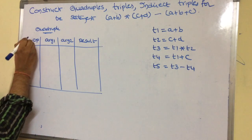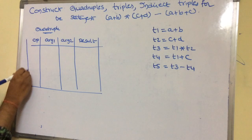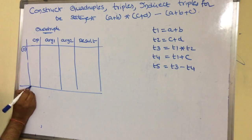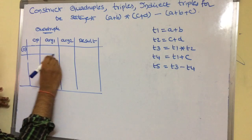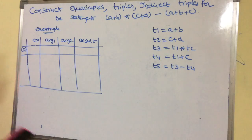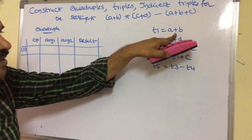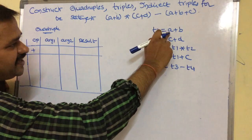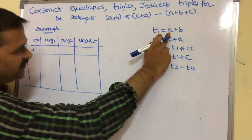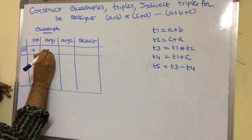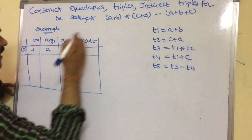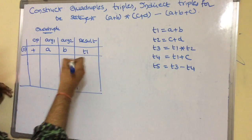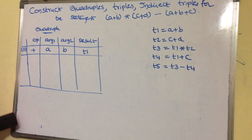Let the first instruction be stored at address 0. The operation we are performing is plus. The left hand side argument, argument 1, is a. Argument 2 is b. And the result is stored in t1.